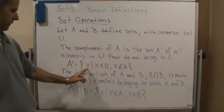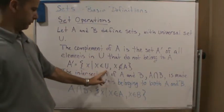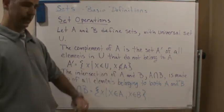A prime is equal to the set of X such that X is an element of U and X is not an element of A.